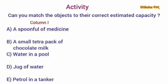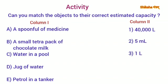Now here is an activity for you. Can you match the objects to their correct estimated capacity? Column 1: (a) a spoonful of medicine, (b) a small tetra pack of chocolate milk, (c) water in a pool, (d) jug of water, (e) petrol in a tanker. Column 2: 40,000 liters, 5 ml, 1 liter, 3,500 liters, and 250 ml. Your time starts now!